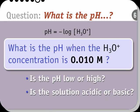What is the pH of a solution when the hydronium ion concentration is 0.010 moles per liter? If you predicted the pH would be low and the solution acidic, you would be correct. Let's do the calculation on the next slide.